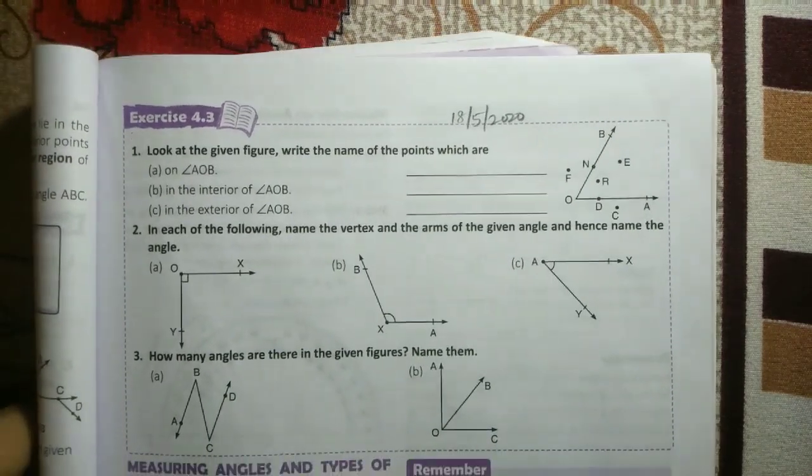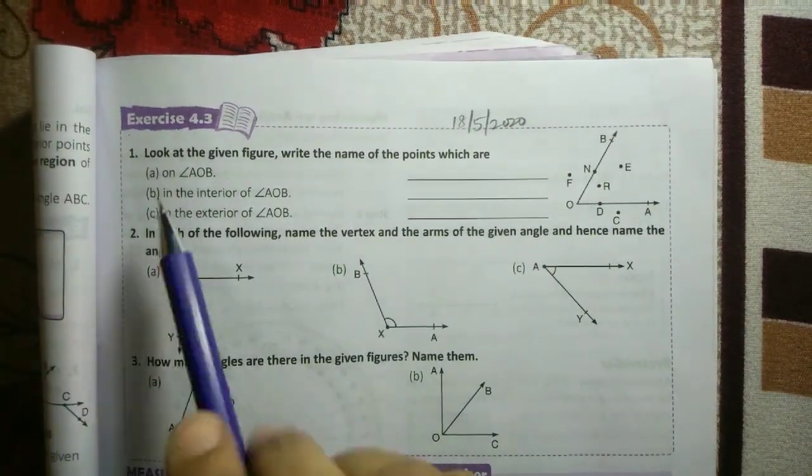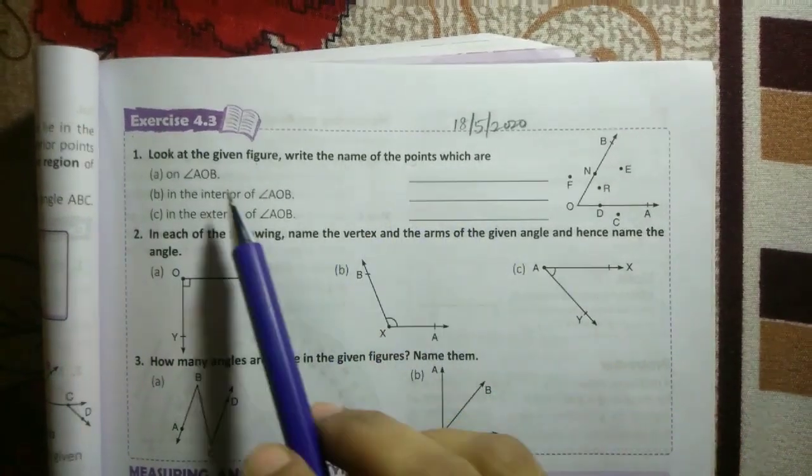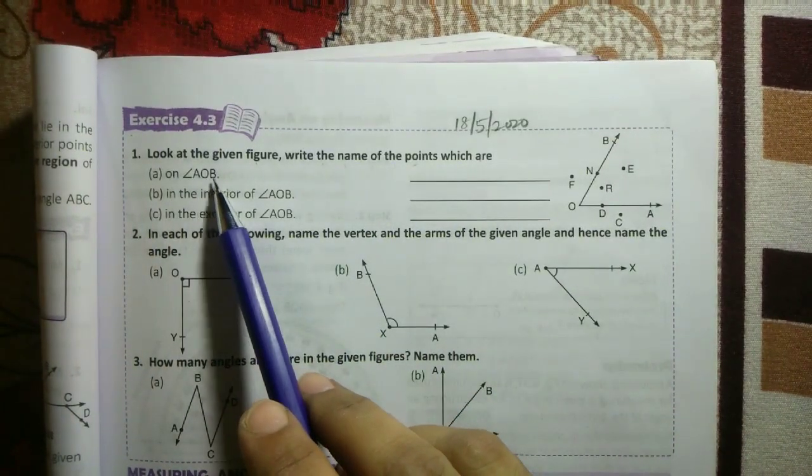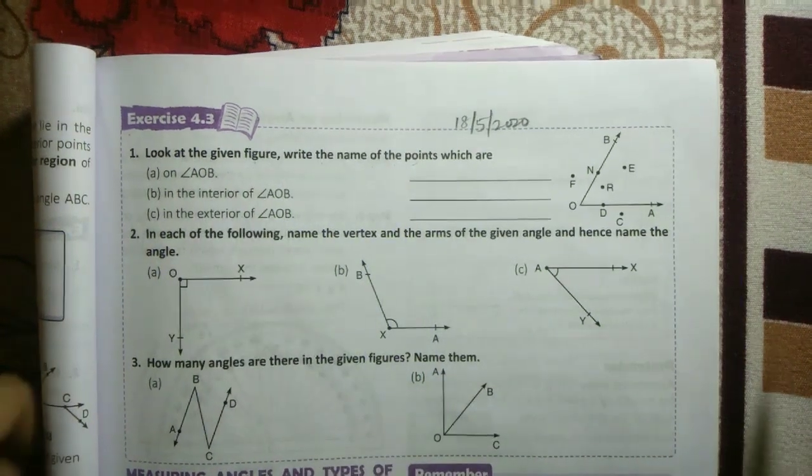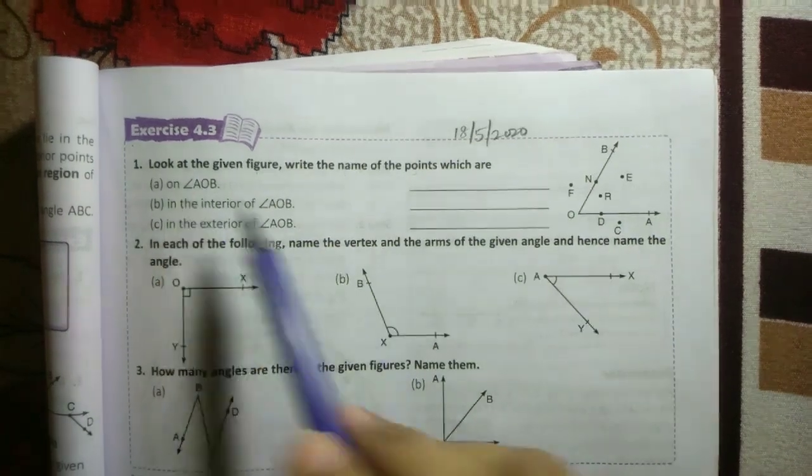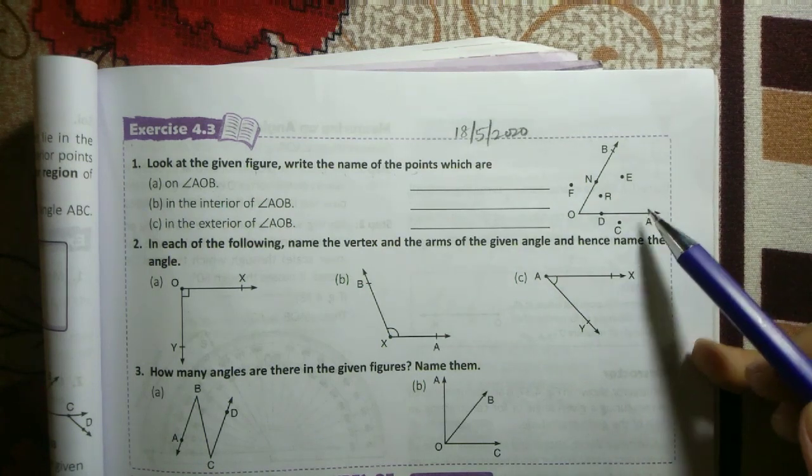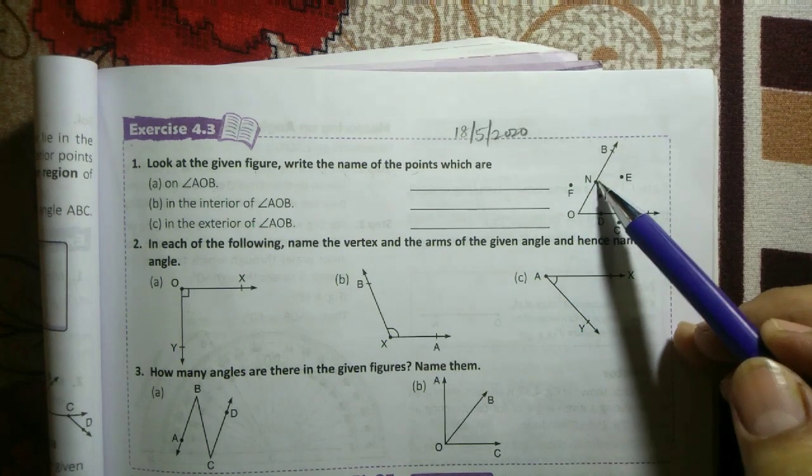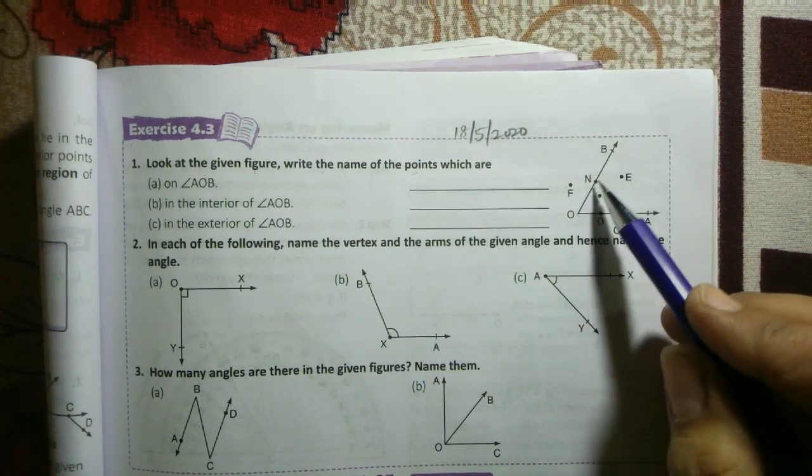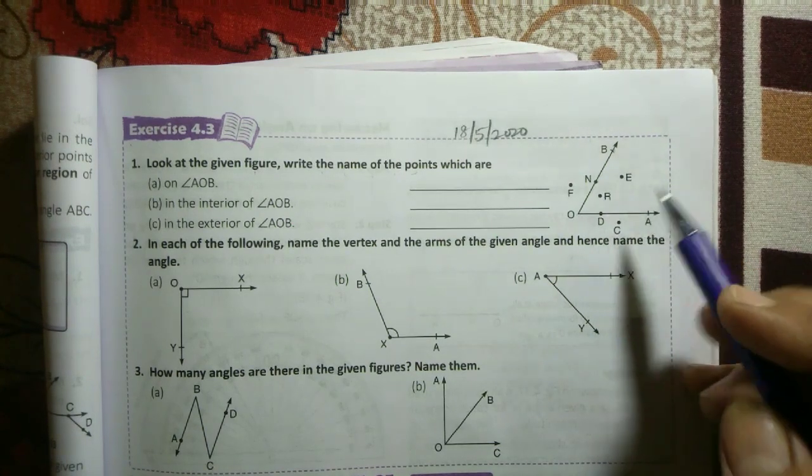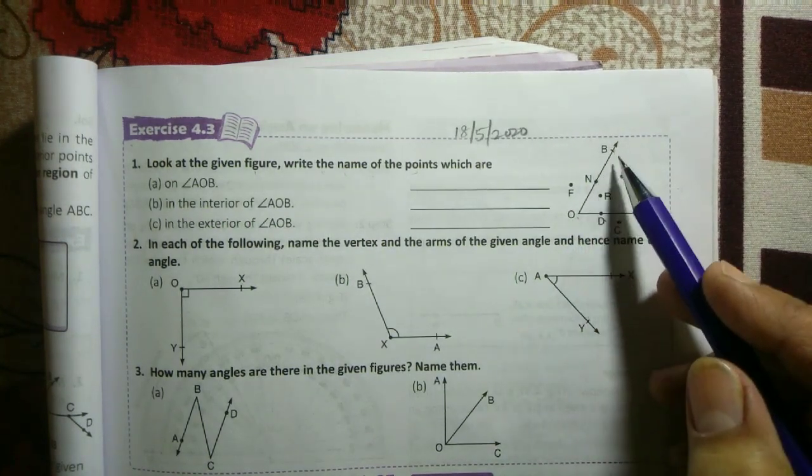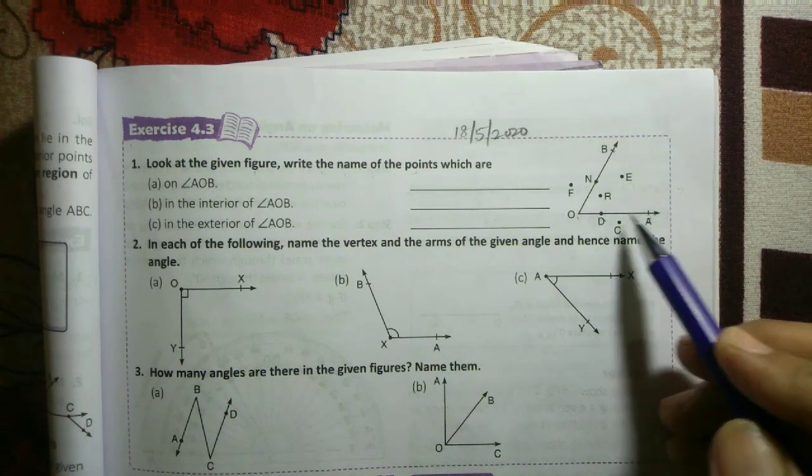In exercise 4.3, what they give you: look at the given figure, write the name of the points which are first on angle AOB. So students, see angle AOB, which is point A, point D, O, N, and B. Just put it on the page.